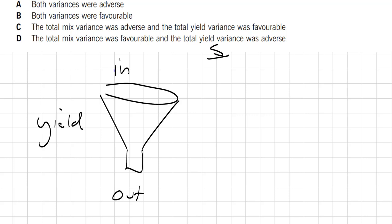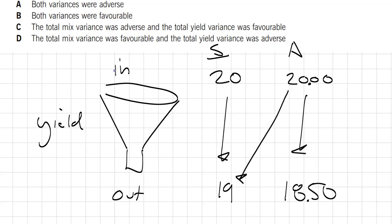So the yield variance is looking at in versus out. Guys, the standard says we should put in 20 liters, we get 19. The actual results show that we put in 2000, and we got out 1,850. Now you see what's going on here. Put a decimal place there. Put a decimal place there. And it's easy to compare to the standard. So we put in 2000 units of input, which should yield 19. Didn't yield 19. It yielded 18.5. So we got fewer units from our inputs. Everybody, yield variance is adverse.